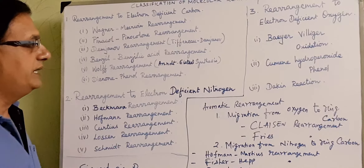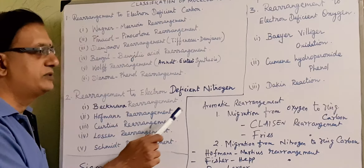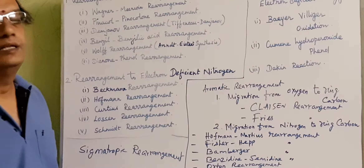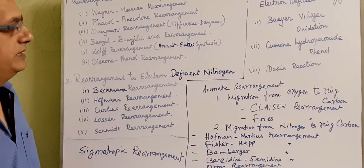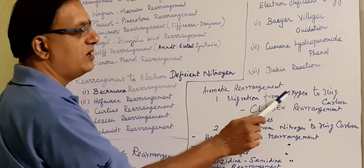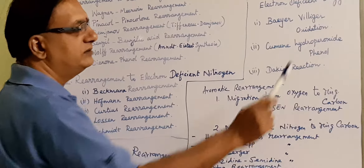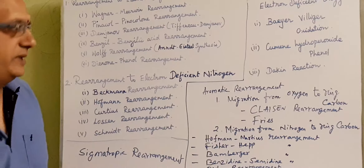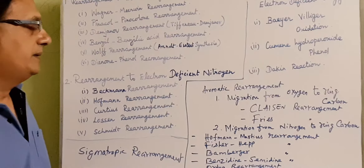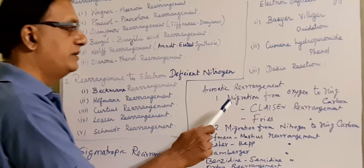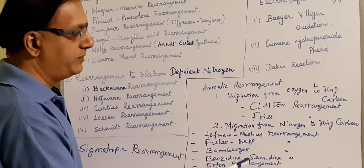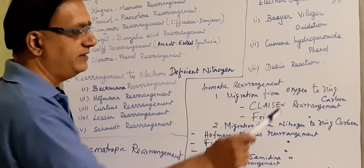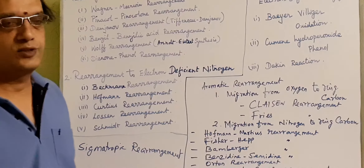Rearrangements leading to the aromatic ring — migration from oxygen to ring carbon — which has two examples: Claisen rearrangement and Fries rearrangement.